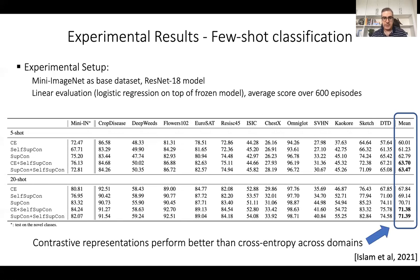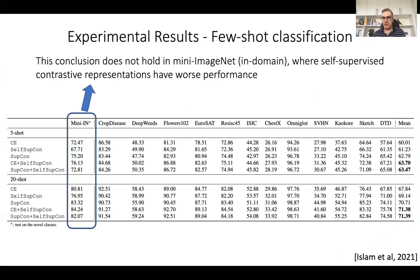The main conclusions from few-shot classification are: first, contrastive representations perform better than cross-entropy across domains — looking at mean accuracy across all domains, for 5-shot we have about a 3% accuracy gain, and for 20-shot we have 71 versus 67, which is about 4% accuracy gain. However, this conclusion does not hold on MiniImageNet itself, where self-supervised learning actually performs worse than cross-entropy. Combining cross-entropy with contrastive loss does give a boost, but these results suggest that optimizing representations on ImageNet may not be a good proxy for performance on datasets from very different domains.